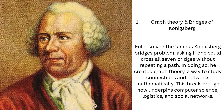Graph Theory and Bridges of Königsberg: The city of Königsberg had seven bridges connecting its islands and riverbanks. Citizens wondered if it was possible to walk across each bridge exactly once. Euler proved it was impossible, but went further. He abstracted the problem using nodes and edges, forming the basis of graph theory. This approach allowed mathematicians to study connectivity, networks, and paths in a systematic way. Today, graph theory helps design internet networks, airline routes, and social media algorithms.